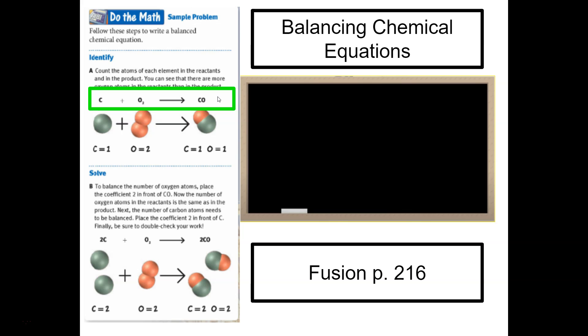We're going to start with the unbalanced equation and we'll write it down on our paper. And then what I like to do is draw two lines to make sort of a t-chart, where we cut the equation in half right down the middle where the arrow is. And that way we have on one side our workspace for our reactants and on the other side, the workspace for the products.